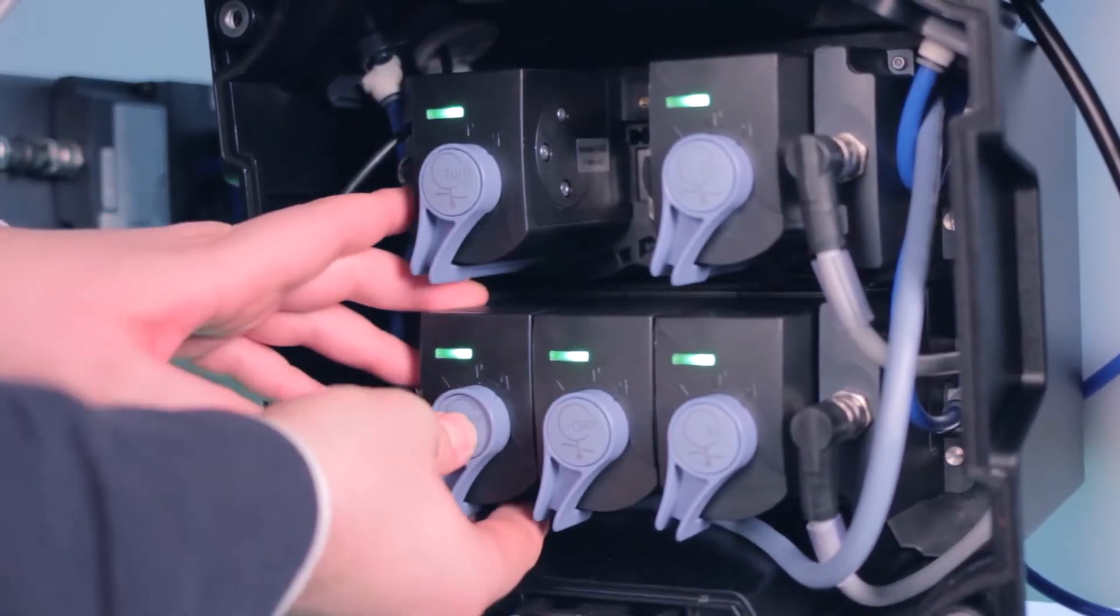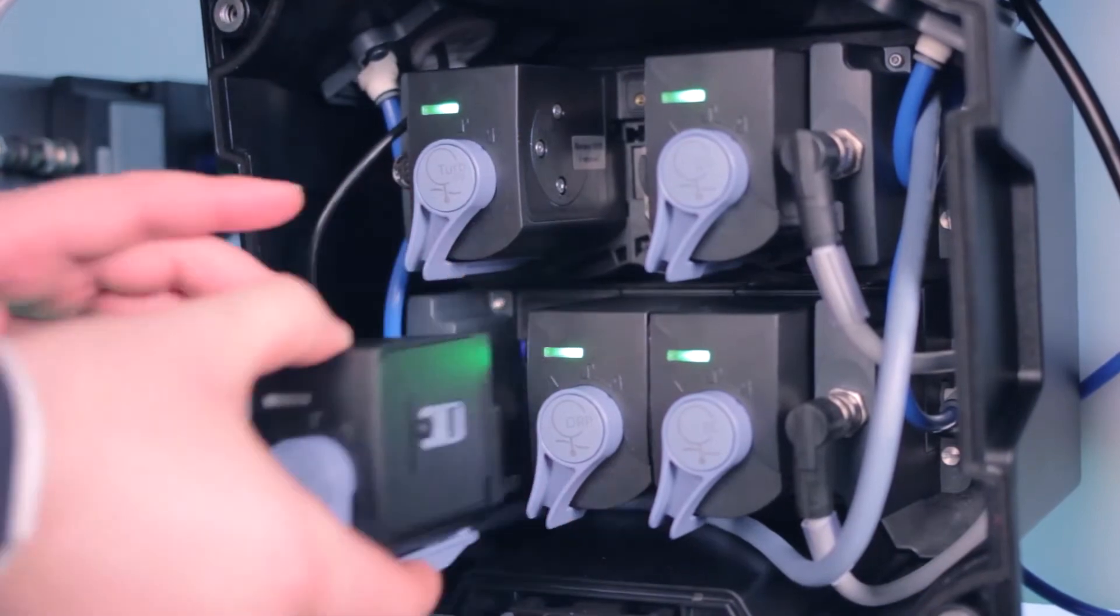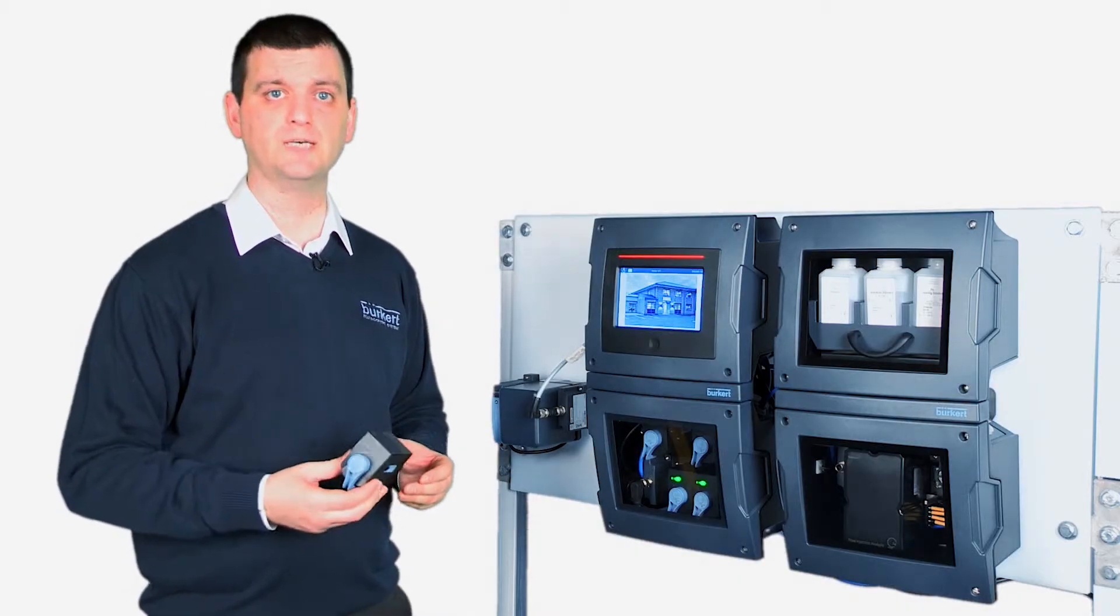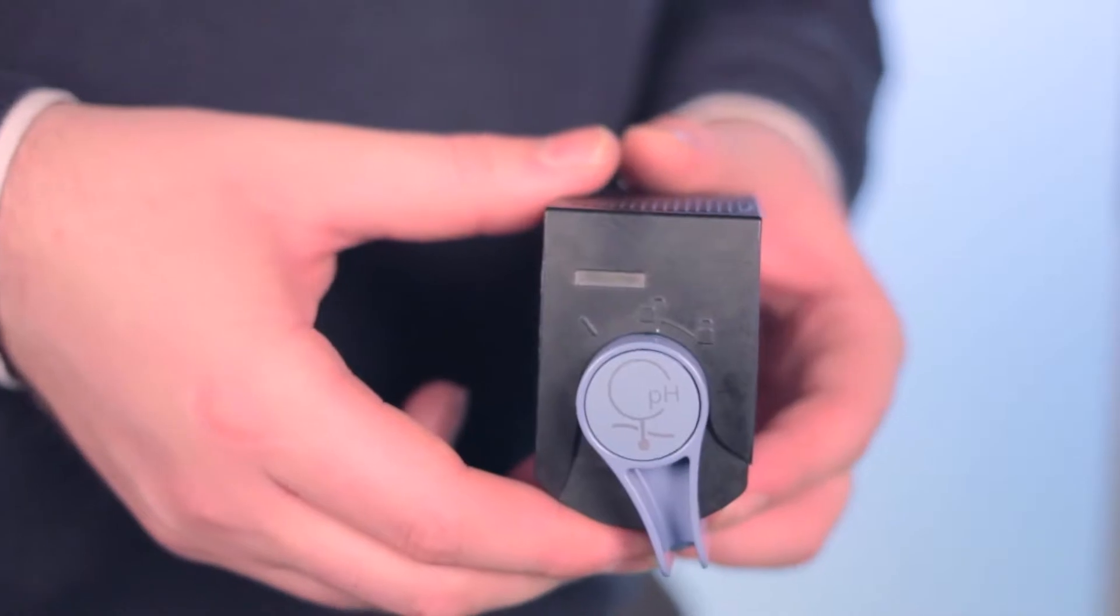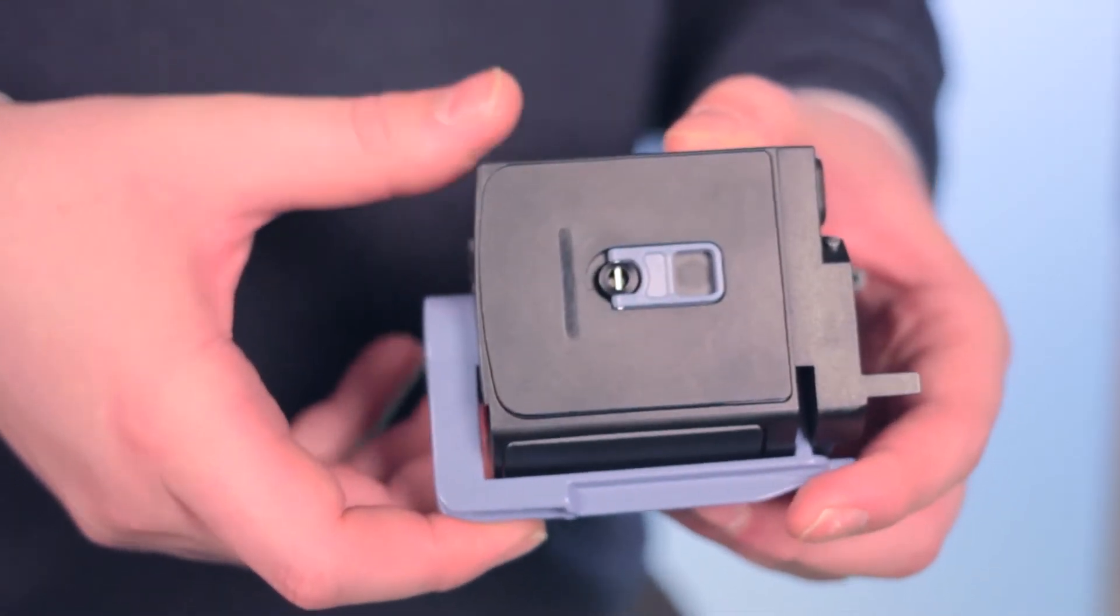An important part of the system are the unique sensor cubes. Each sensor is a parameter on its own, for example pH or turbidity. This means you only need to order the parameters that you need to measure.